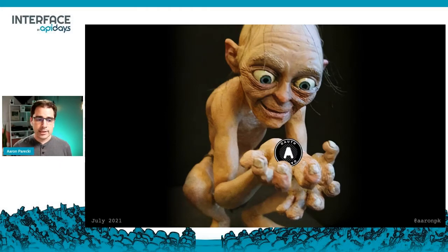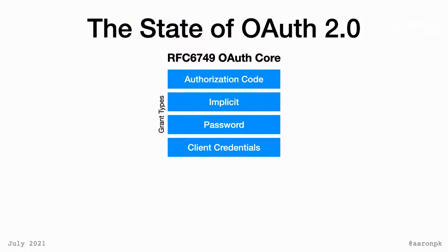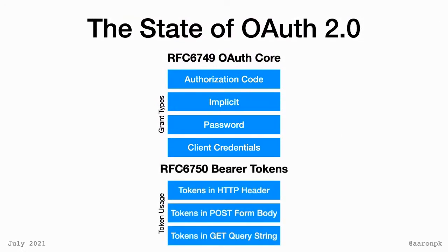A bearer token is the idea that if you are holding on to the token, you can access that data. Think of it like a hotel key card — you check in, they give you the card, which gives you access to various rooms. That key card doesn't necessarily represent you as a person; it represents that you can access certain resources. This is documented in a separate RFC, which also talks about various ways to use the token — in an HTTP header, a form post body, or a query string.